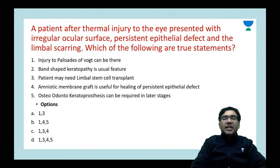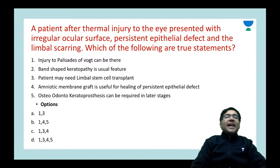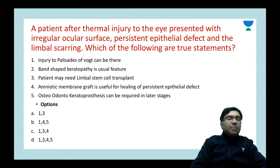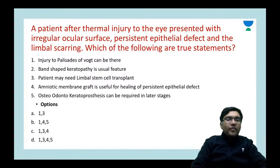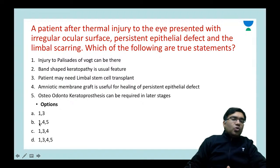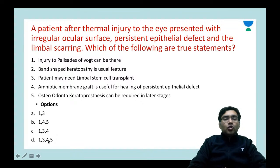A new pattern INICET question: a patient after thermal injury to the eye presents with irregular ocular surface, persistent epithelial defect, and limbal scarring. Which statements are true? 1) Injury to the palisades of Vogt can be there. 2) Band-shaped keratopathy is a usual feature. 3) Patient may need limbal stem cell transplant. 4) Amniotic membrane graft can be used for healing persistent epithelial defect. 5) Osteo-odonto-keratoprosthesis can be required. Options for combined true statements are 1,3 / 1,4,5 / 1,3,4 / 1,3,4,5.